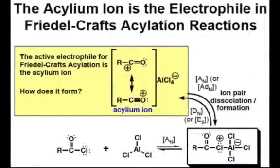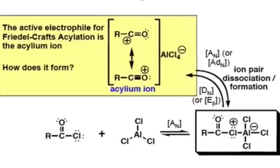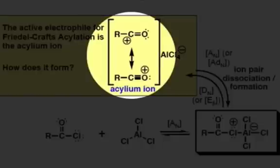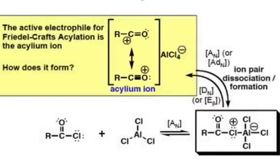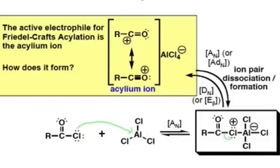As with all the electrophilic aromatic substitution mechanisms, it's most important to understand the generation of the electrophilic species. The active electrophile that reacts with aromatic rings is the resonance-stabilized acylium ion. The acylium ion is only produced in the presence of the aluminum trichloride species. First, the chloride of the acyl chloride species associates with the aluminum to form the Lewis acid-base complex. Following this, the chlorine dissociates from the carbonyl to generate the acylium ion. Recall from the Friedel-Crafts alkylation mechanism, the acylium ion is resonance stabilized and therefore does not undergo rearrangement. This is one advantage the acylation reaction has over the alkylation reaction.